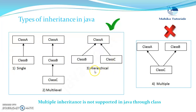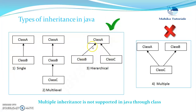The third kind of inheritance supported in Java is hierarchical inheritance. Hierarchical inheritance means that for one super class we can have multiple subclasses. In this example, class A is the super class, and then we have class B that extends class A and class C that extends class A.